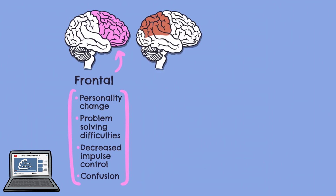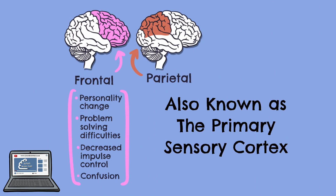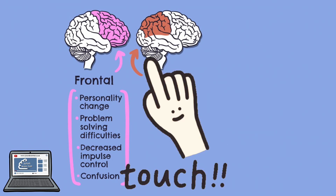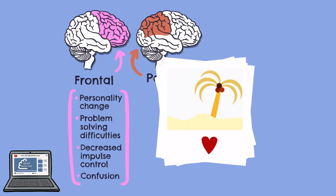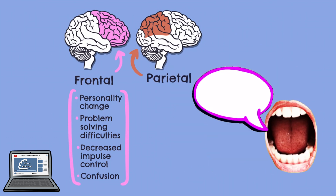The parietal lobes sit near the top middle section of the cerebral cortex, just behind the frontal lobes and above the temporal lobes. Near the front of the parietal lobe lies one of its main regions called the somatosensory cortex. The main function of the somatosensory cortex is to process sensory input from the rest of the body as well as the surrounding environment. Additionally, the parietal lobes play a role in assisting memory, cognition, speech and reasoning.